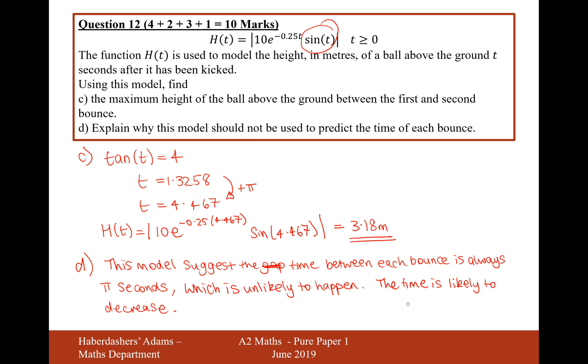So it's nothing to do with stationary points, actually. It's to do with sine here being a function that goes back down to zero every pi radians, so therefore every pi seconds it's going to bounce. So that's unlikely. The time is likely to decrease between the bounces, between each successive bounce.